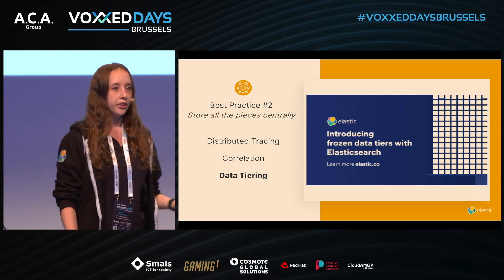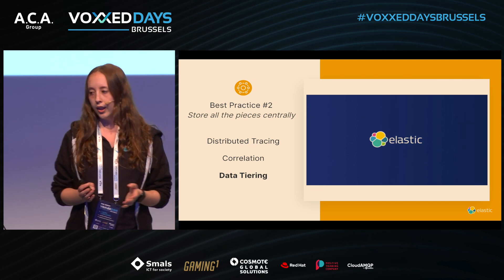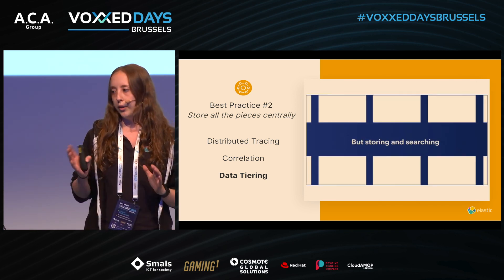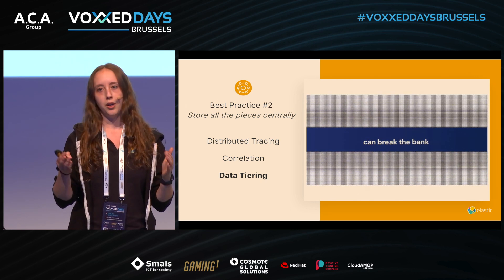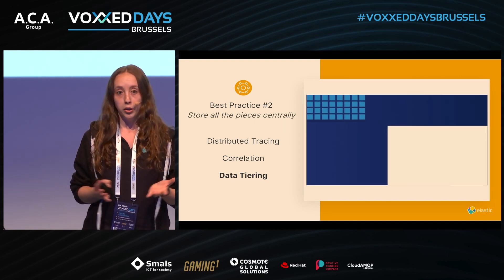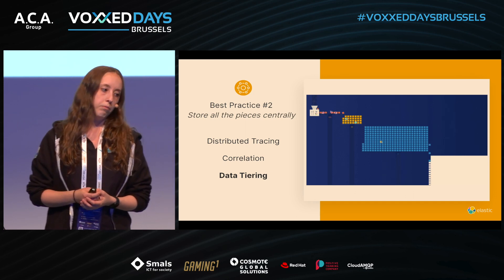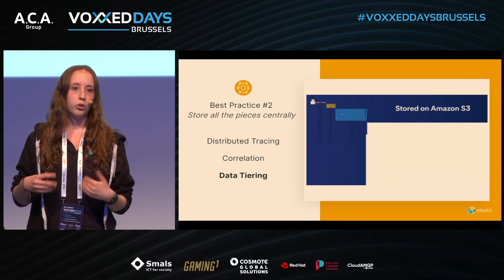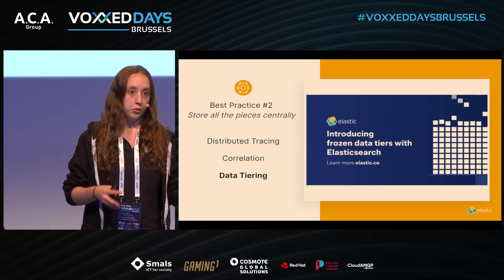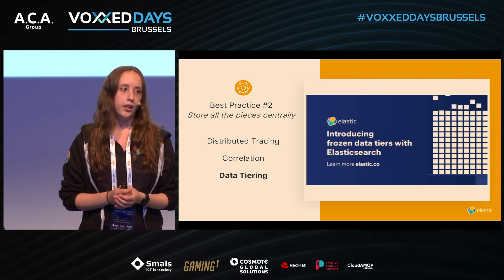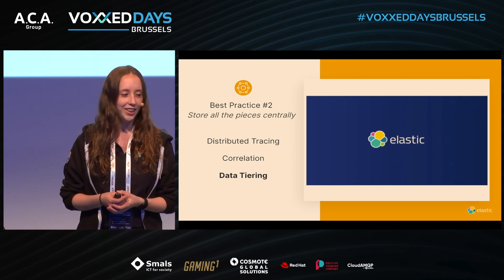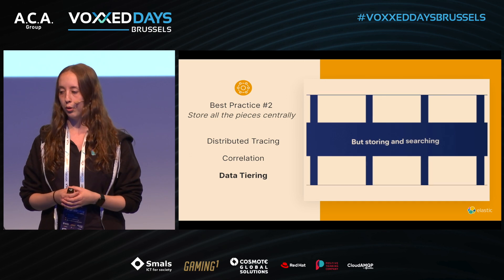Of course, you cannot keep all your data forever, and also not all in hot tiers. That's why it's important to leverage data tiering. We have a hot tier, but we also have a warm, cold, and frozen tier. It makes sense for data that you use for, say, a quarterly report to store in a cold tier, which is more cost efficient. For security data or audit logs that you may keep for years, we suggest storing those in a frozen tier, giving you a cost-effective way to store data for a long time. And you can still search across all these tiers.